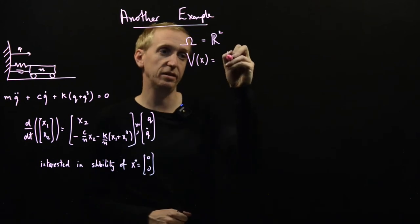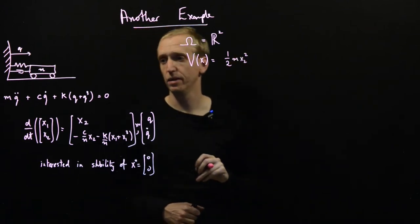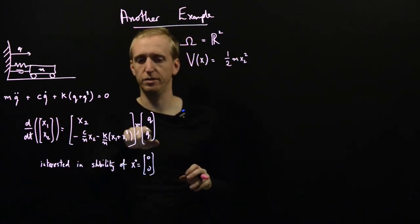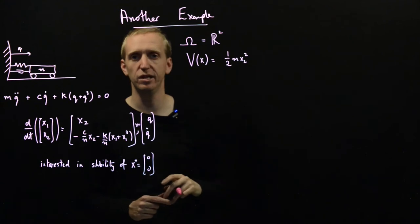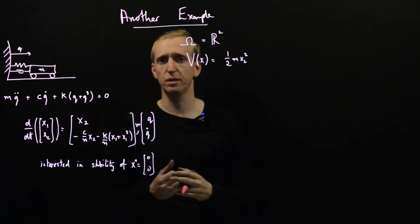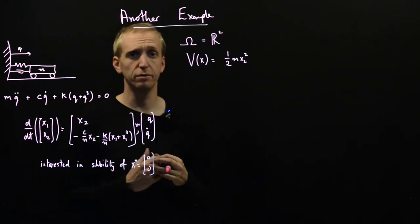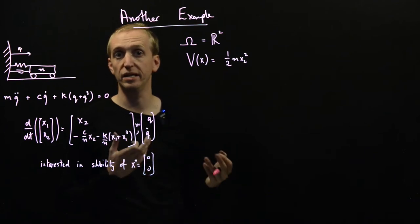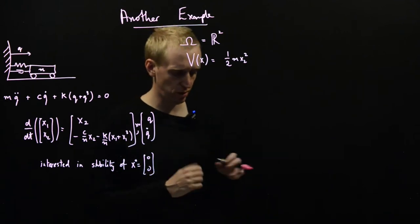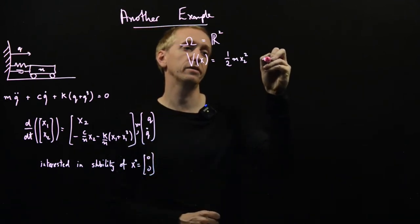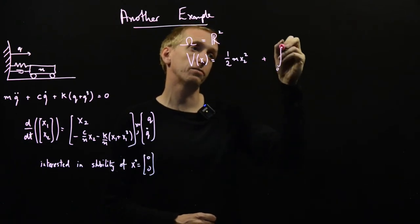And for our Lyapunov function once again we're going to just appeal to our energy intuition and we're going to say our Lyapunov function V(x) is equal to the kinetic energy plus the potential energy. So the kinetic energy is easy, that's a half m x2 squared. So x2 is q dot so this is just the velocity of the truck. So this is normal kinetic energy but what's a sensible term for potential energy?